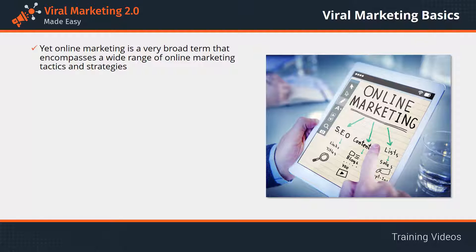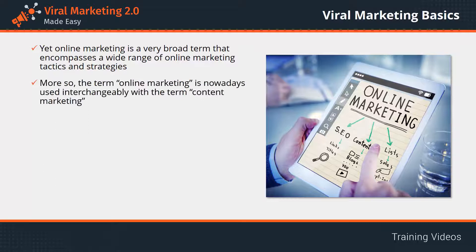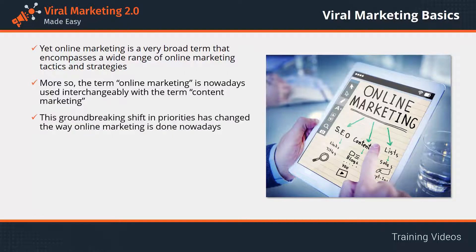Every possible activity that can help a marketer achieve a business objective online can be considered online marketing. The term online marketing is now used interchangeably with content marketing, defined as an online marketing approach focused on distributing value through content. An online marketing campaign that does not deliver valuable content is simply doomed to fail. This shift in priorities has changed the way online marketing is done, with newer strategies taking the spotlight alongside classics such as email marketing and banner ads, including SEO.